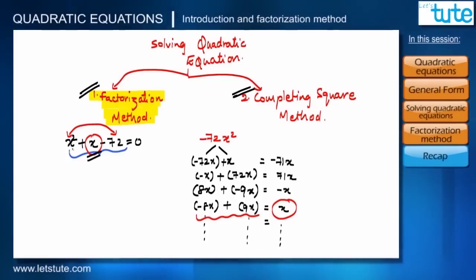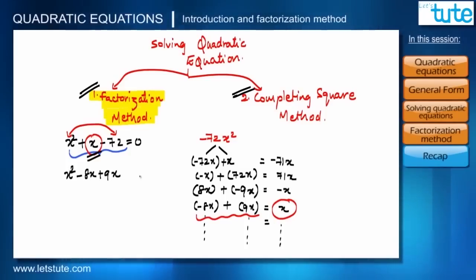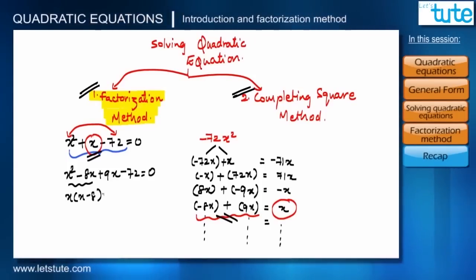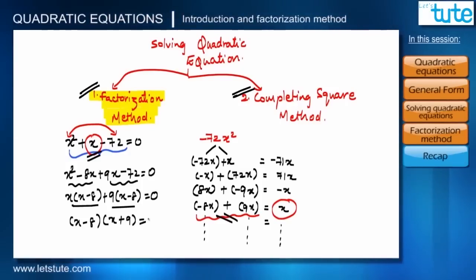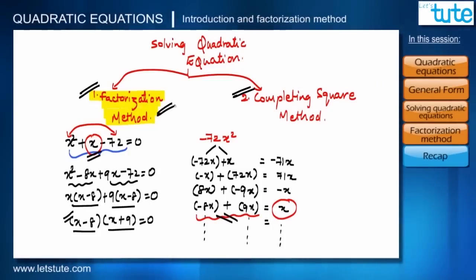We rewrite the equation as x² − 8x + 9x − 72 = 0. From the first two terms, x is common, giving x(x − 8). From the last two terms, 9 is common, giving 9(x − 8). Now (x − 8) is common from both groups, so we factor it out: (x − 8)(x + 9) = 0. The equation is now expressed as a product of two factors — that's why this is called the factorization method.